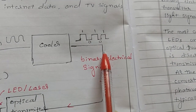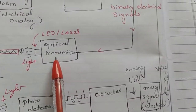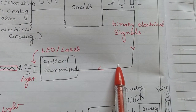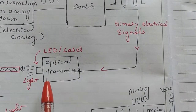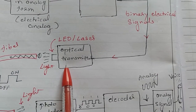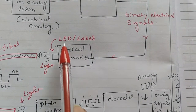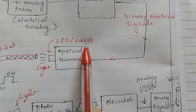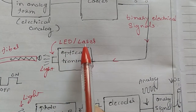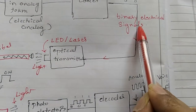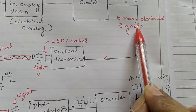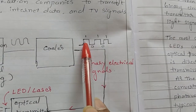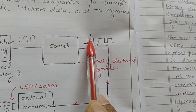This binary electrical signal is the input data for the optical transmitter. The binary electrical signal is directly fed to the optical transmitter, which consists of light sources like LED or laser diodes. The LED or laser diode converts the binary electrical signal into pulses of light.